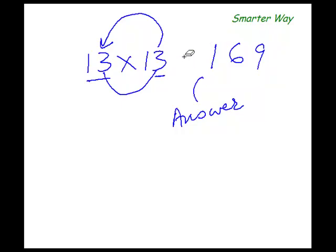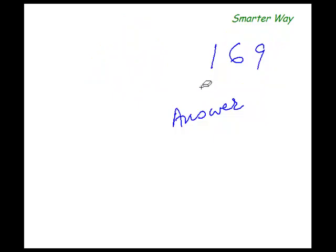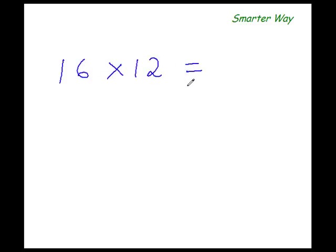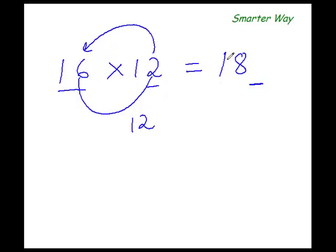So let's take one more example and be careful this time because I'm going to set up a trap for you. What is 16 times 12? Add this 2 to 16, 16 plus 2 is 18. Now 6 times 2 is 12 and you know that 12 is a 2 digit number. And there is only one place here to go. So carry forward 1, write 2 here. So the answer is 192.